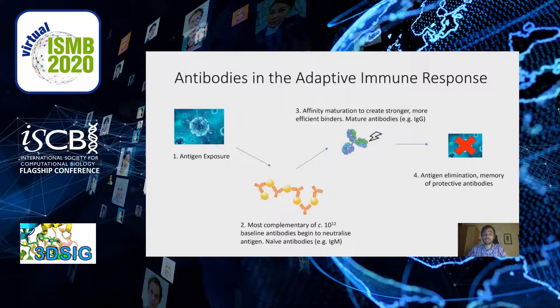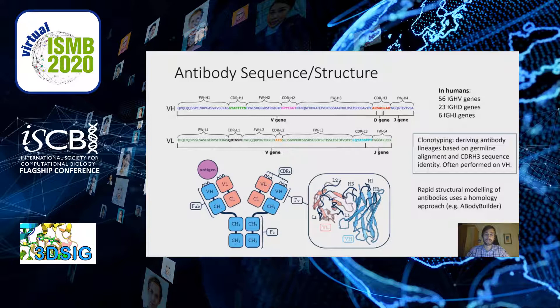After selection, when we end up with an antibody that sufficiently strongly binds the antigen to clear it, we end up with a protective immunity that remembers which antibodies were effective.